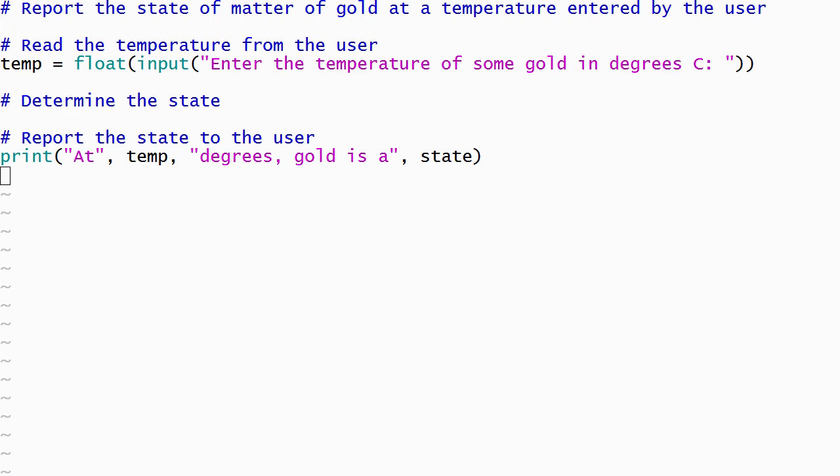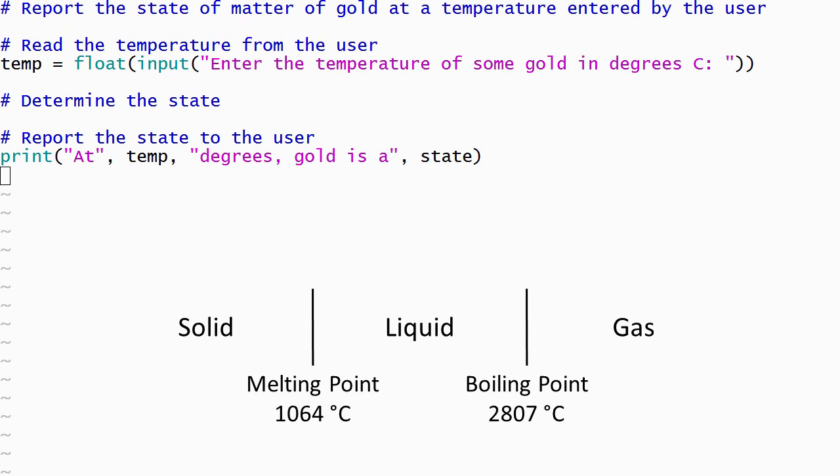There are three states of matter for gold that can be determined from its temperature. If the temperature is less than the melting point, then the gold is a solid. If the temperature is between the melting point and the boiling point, then it's a liquid. If the temperature is greater than or equal to the boiling point, then it's a gas.